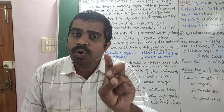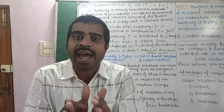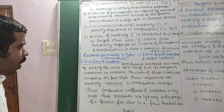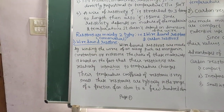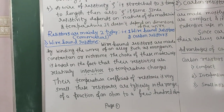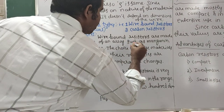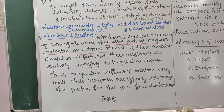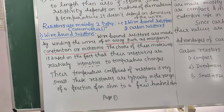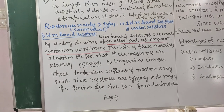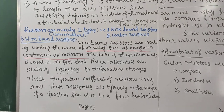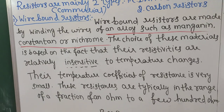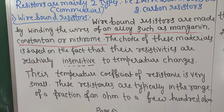Wire-wound resistors are made by winding wires of alloys such as manganine, constantan, or nichrome. These all are alloys — mixtures of more than two metals. The choice of these materials is based on the fact that their resistivities are relatively insensitive to temperature changes. Their temperature coefficient of resistance is very, very small.